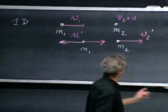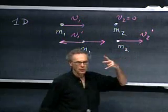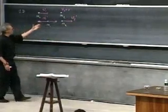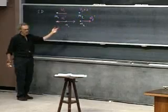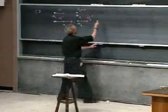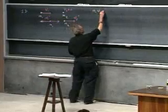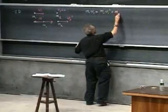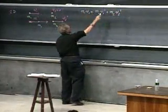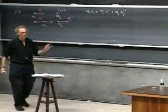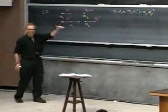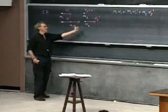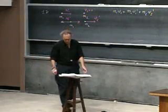To find V1 prime and V2 prime, we need two equations. If there is no net external force on the system during the collision, then momentum is conserved. So we can write down that M1 V1 = M1 V1 prime + M2 V2 prime. Since this is a one-dimensional case, you can leave the arrows off and the signs will automatically take care of the direction — if you get a minus sign, the velocity is in the opposite direction.